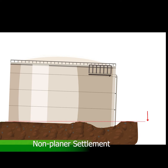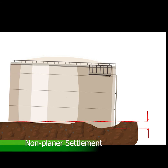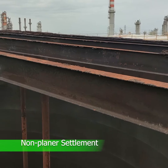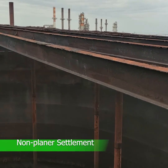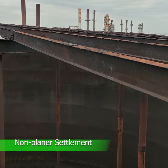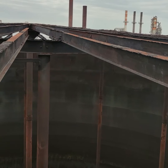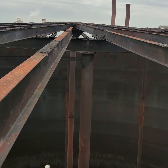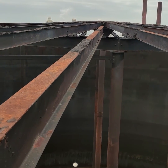Due to the fact that a tank is a rather flexible structure, the tank may settle in a non-planar configuration. This settlement can lead to out-of-roundness at the top of the shell and may also affect the internal roof support structures, such as columns, rafters and girders.